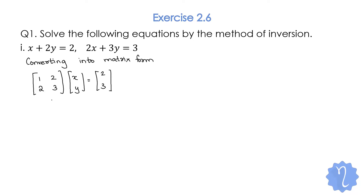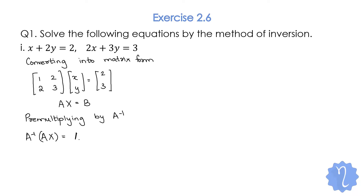This is of the form AX = B. Then we write: pre-multiplying by A⁻¹ we get A⁻¹ · A · X = A⁻¹ · B, therefore I · X = A⁻¹ · B, and therefore X = A⁻¹ · B. Now we need to find A inverse.